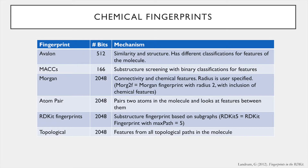This is a list of all the chemical fingerprints I used. All these fingerprint methods are available through the RDKit Python package. There is also a summary of the number of bits in each fingerprint and the mechanism of how the small molecule chemical structure was converted into the bit vector.